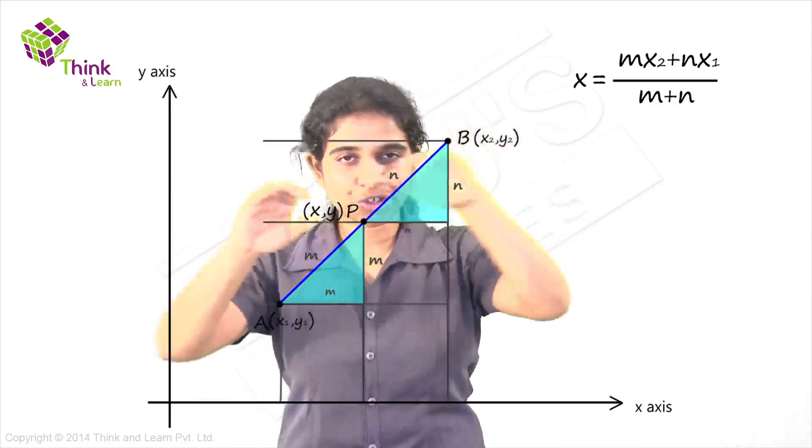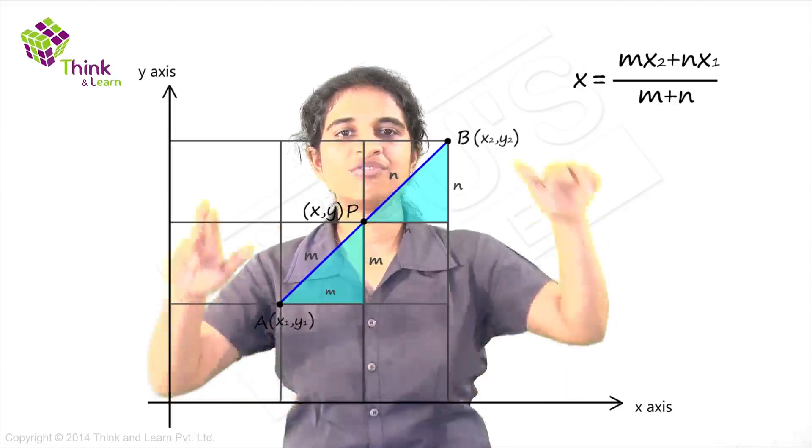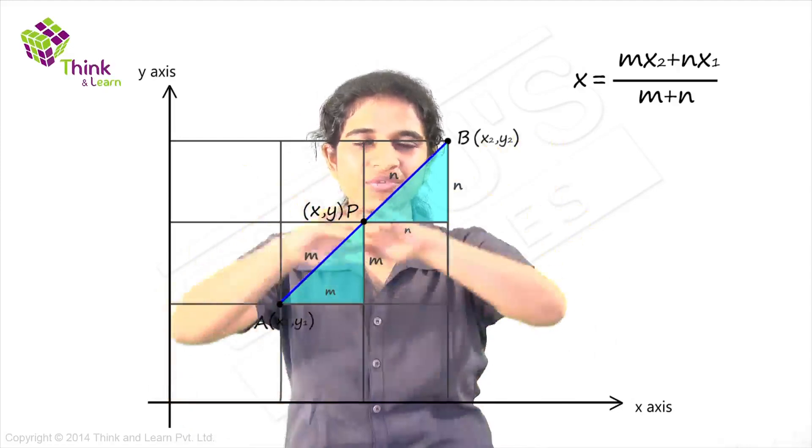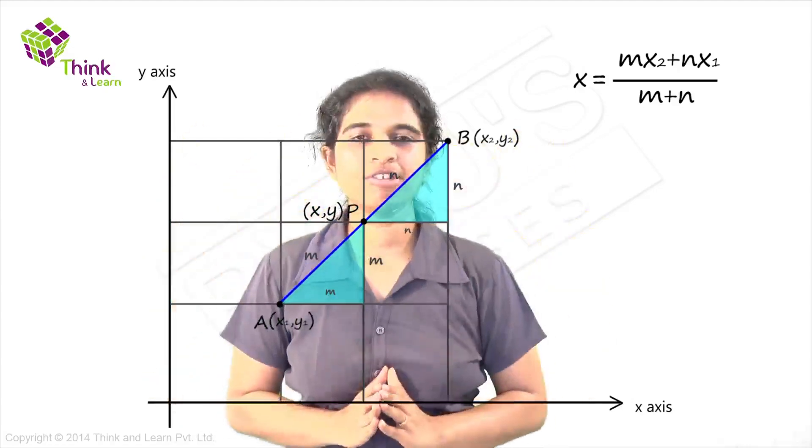Now let's draw some more lines and convert the triangles into rectangles. Let's add some more triangles and convert this into rectangles. Now this is the figure we have.